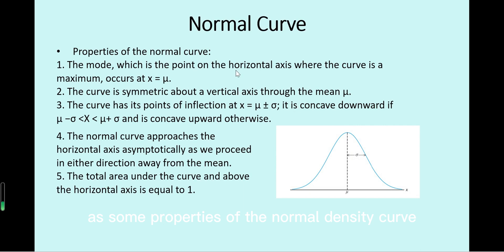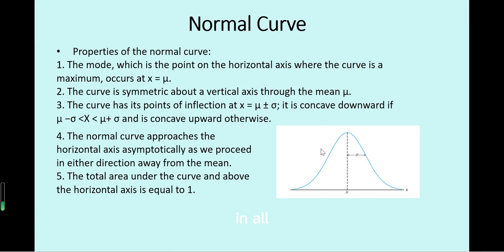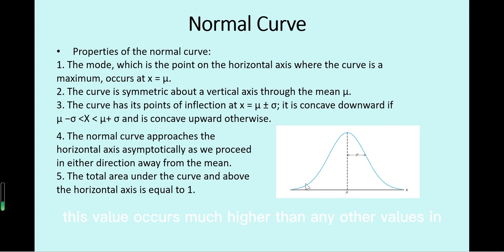Some properties of the normal density curve. The first is the mode — the point at which values occur most frequently among all available values. The mean is also the mode in the normal distribution because this value occurs much higher than any other value in the normal density curve.